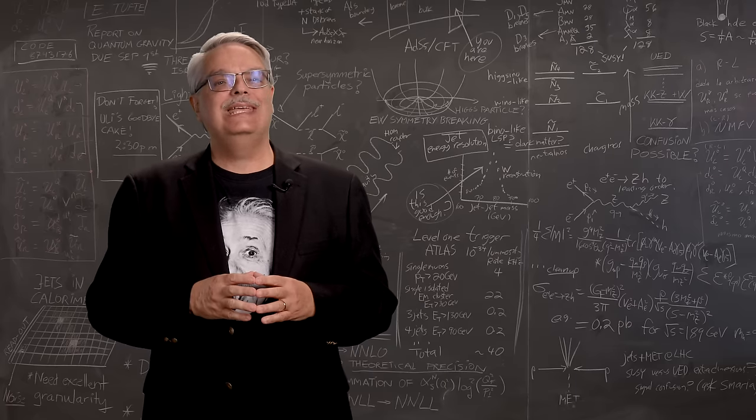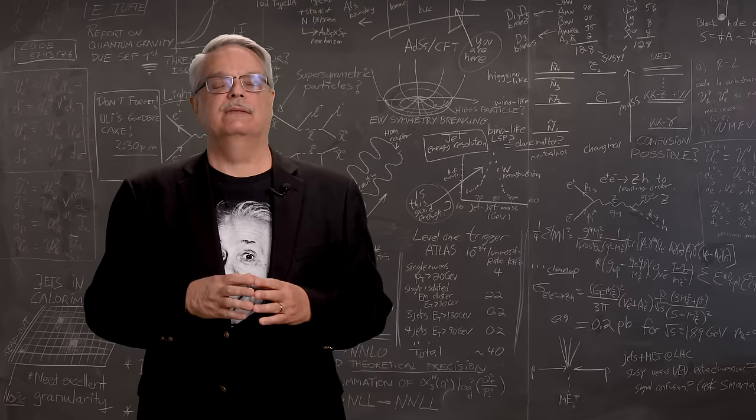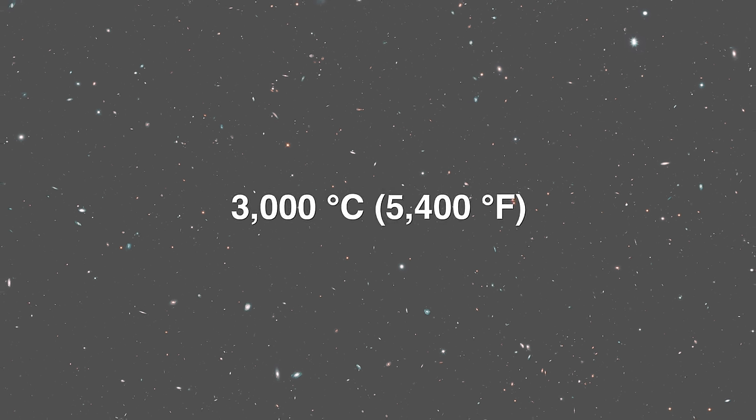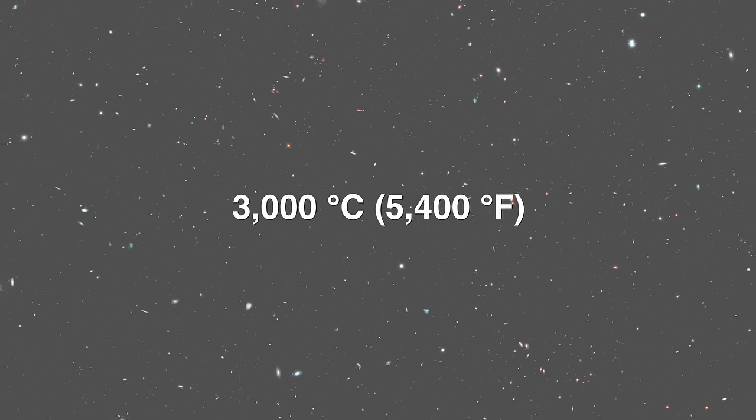Let's start with talking about the oldest and most distant thing we can see. As it happens, we can't see the moment the universe began. That's because the early universe was so hot that light couldn't pass through it. You can sort of think of it like a fog. However, there was a moment, about 380,000 years after the Big Bang, when the universe cooled enough to become clear. The temperature at which that happened is about 3,000 degrees centigrade, or about 5,400 degrees Fahrenheit.